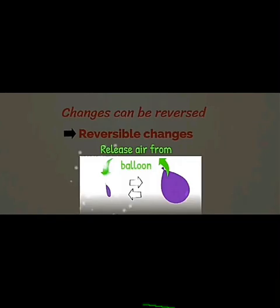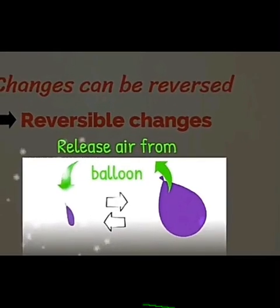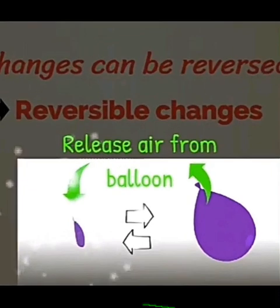Release of air from a balloon: if we blow air into a balloon, the space inside becomes bigger than the original. If we release the air from the balloon, it returns to its original state. So this is also an example of reversible change.